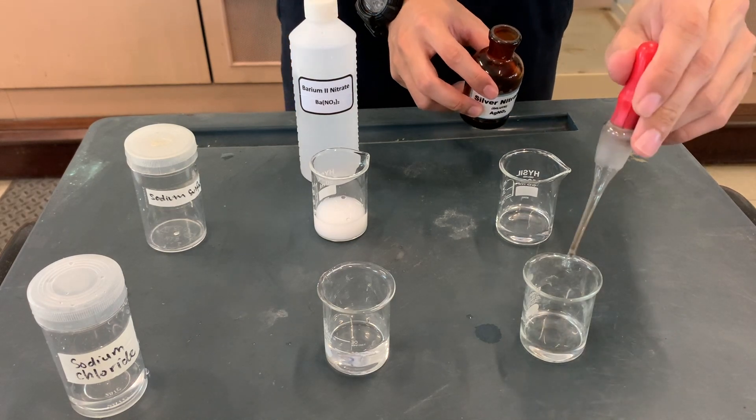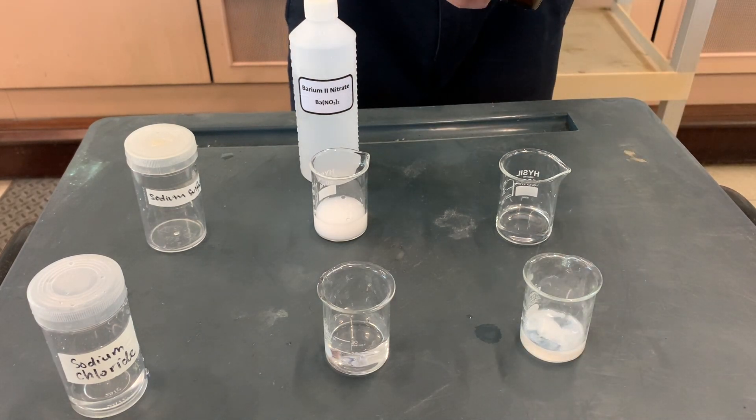And for the last one, when we add silver nitrate to sodium chloride, a white precipitate is seen.